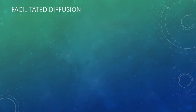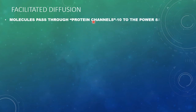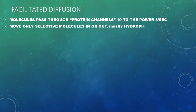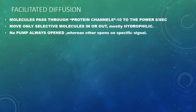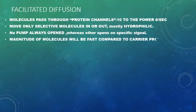Facilitated diffusion means transport with help — it uses channels and ports. Water molecules move at a rate of 10 to the power of 8 per second through channel proteins. Channel proteins are not always open and are selective, moving only specific molecules in or out. The molecules transported are mostly hydrophilic in nature. The sodium channel is always open, whereas other channels open only on signal. The rate of movement through channels is faster compared to carrier proteins.